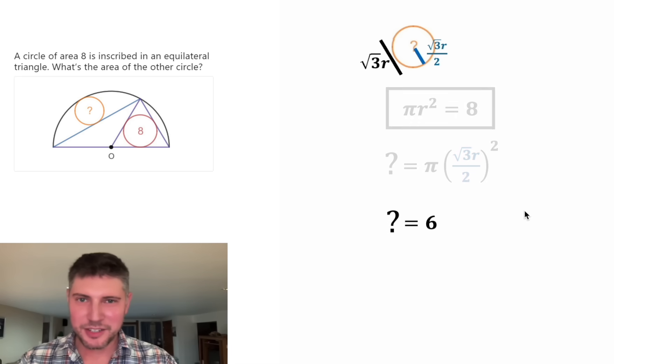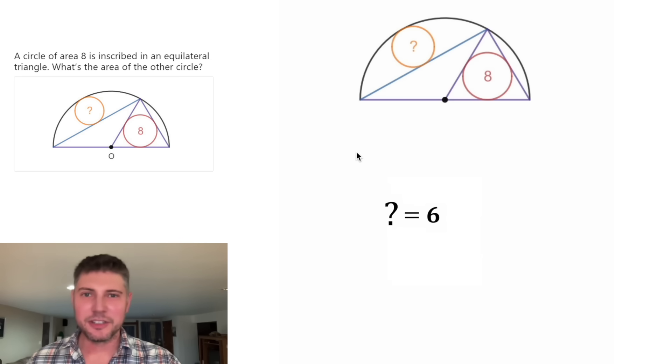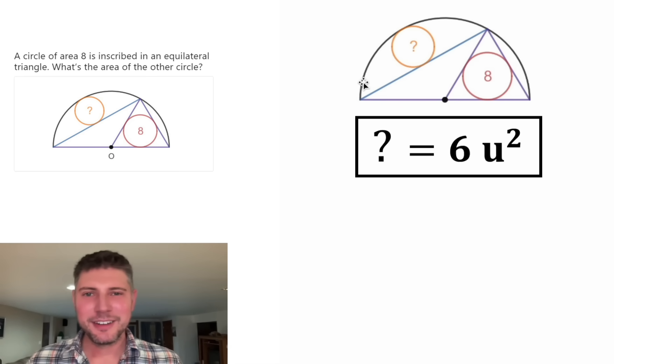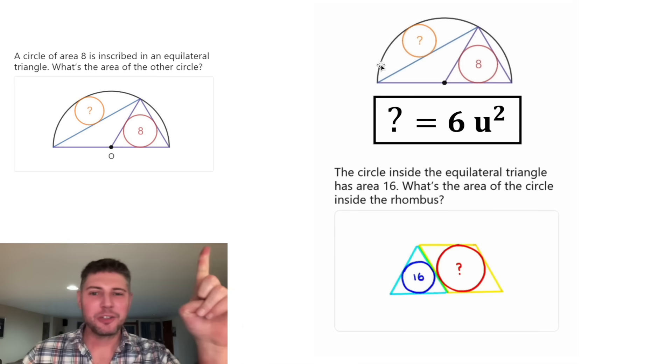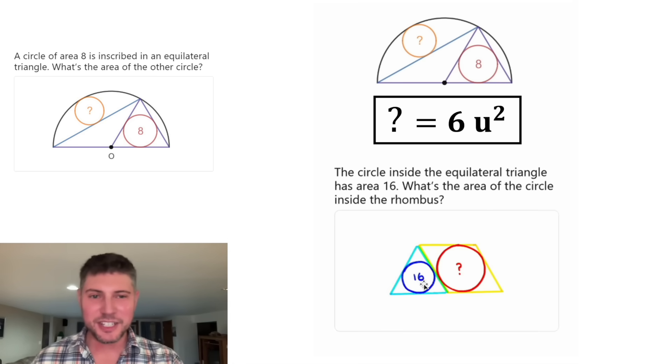And now I think we're done with this stuff. Let's bring back our original diagram. The area of this circle is six units squared. Let's put a box around it. How exciting. Here's tomorrow's problem. The circle inside the equilateral triangle has an area of 16. What's the area of the circle inside the rhombus? How exciting. We'll get this video up ASAP.